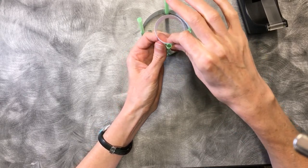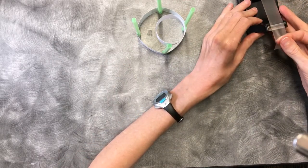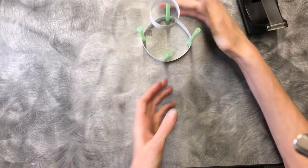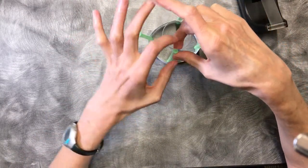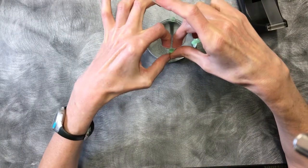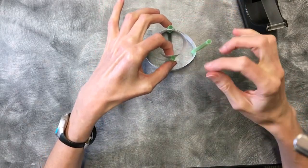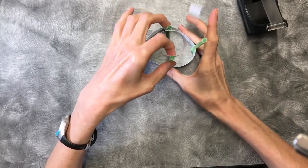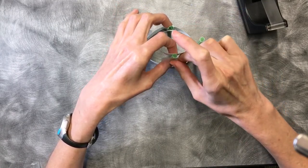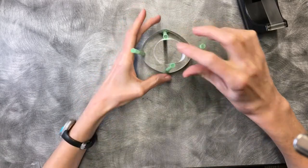Don't worry if the first one doesn't go right - once you get the second one on sometimes that'll go a little better. And the same thing that we did on the bottom where we did one and then we did the one opposite it. That's going to be the easiest way to do it because you want the straws to be hitting that ring on opposite sides.